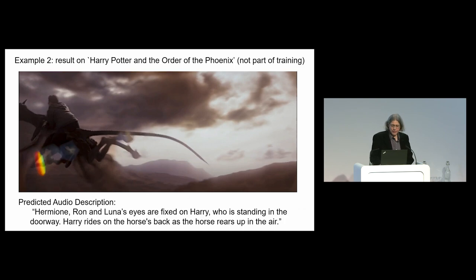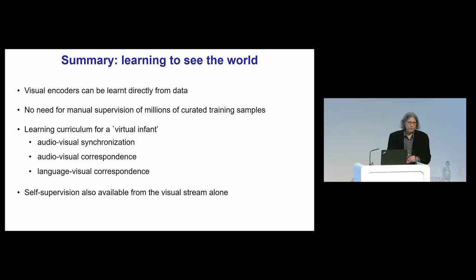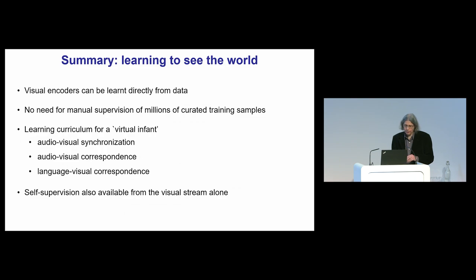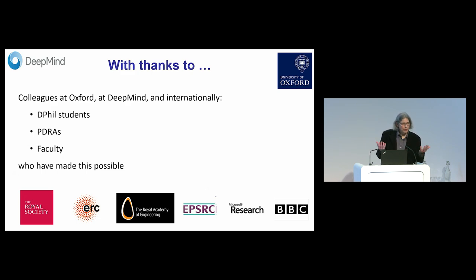To finish: you've seen that it's possible to learn visual encoders directly from data with no manual supervision — a learning curriculum for a virtual infant going through audio-visual synchronisation, audio-visual correspondence, and then language-visual correspondence. The computer vision field also works on learning visual encoders purely from the visual stream. I'd like to end by thanking my students, postdocs, faculty at Oxford, in the UK, and DeepMind internationally — this work wouldn't be possible without all these people.